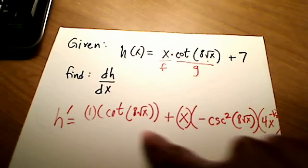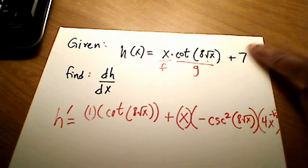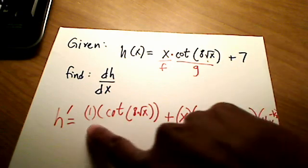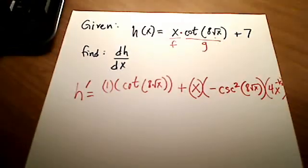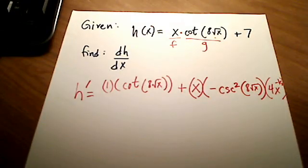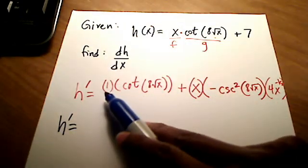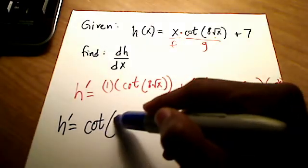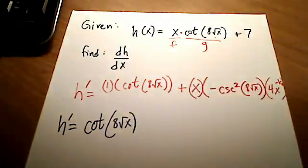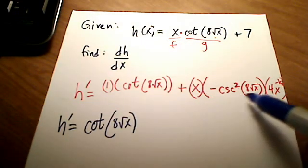So, here's what we've got. This is really huge and nasty, and again, the derivative, if I kept going, the derivative of this constant is just a 0 anyway, so I'm not even going to bother with that. So let me clean this up a little bit more, because we can simplify that down. That really is our answer, but let's simplify it down a bit. So I've got h prime is equal to, and again, 1 times this cotangent is not going to change any, so I'm just going to simply write it as cotangent of 8 square root x.